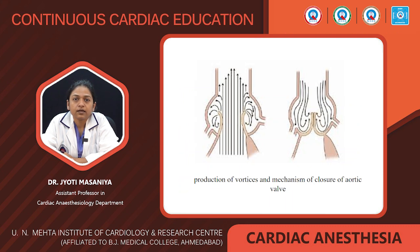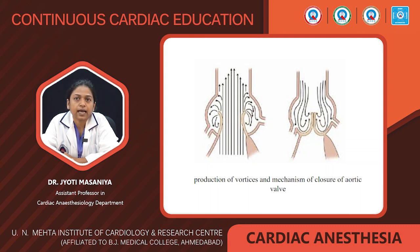As seen in this figure, during late systole, the sinus of Valsalva provides a reservoir of blood, so vortices are developed. These vortices move toward the ventriculoarterial junction during late systole when blood flow velocity starts to decline. These vortices prime the aortic valve leaflets for closure at the onset of diastole.